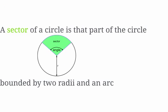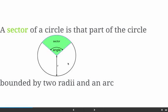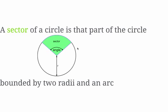Our last vocabulary term is a sector. A sector is a part of the circle bounded by two radii and an arc. If we take an angle, the sector is the region formed by those two radii going out from the center to the edges, along with the arc between them. A sector is part of the area of a circle — for example, if a circle had an area of 4π inches squared, a sector might be π inches squared.